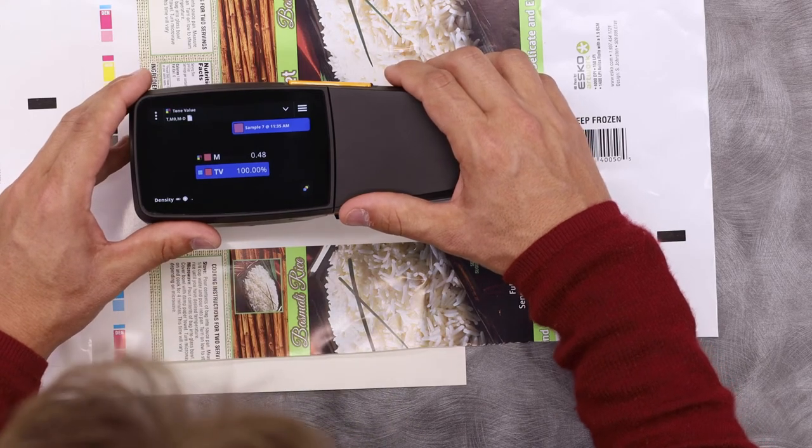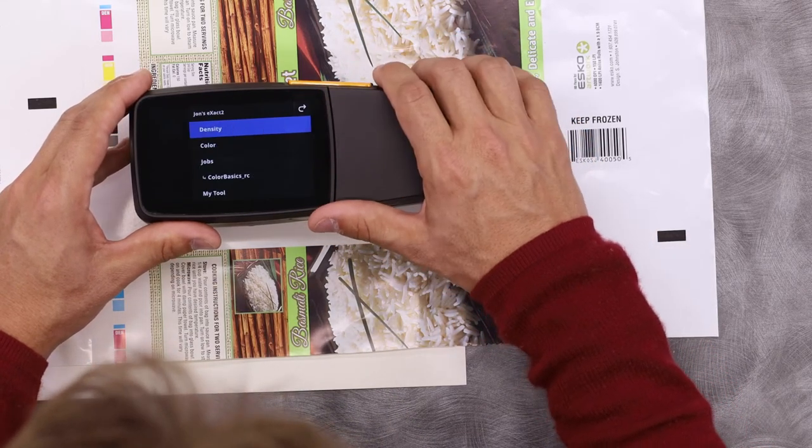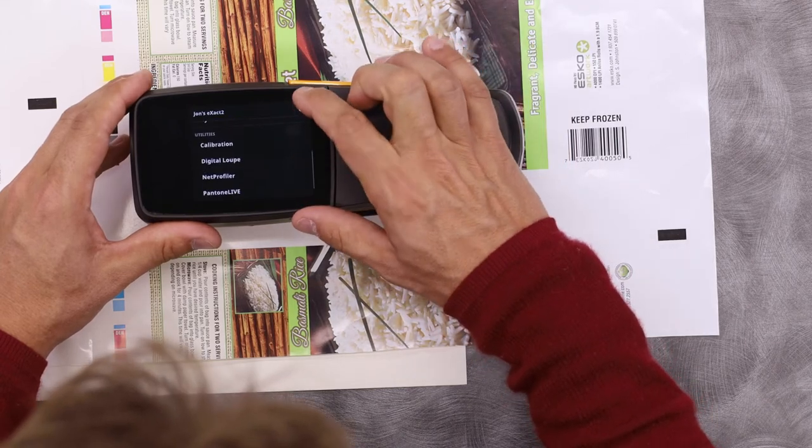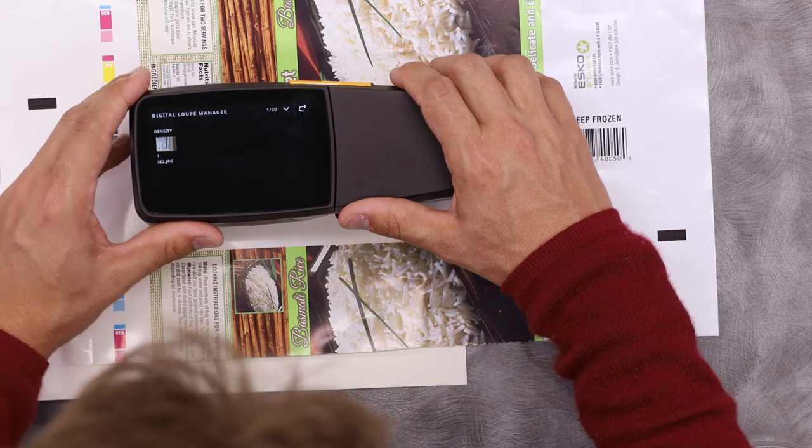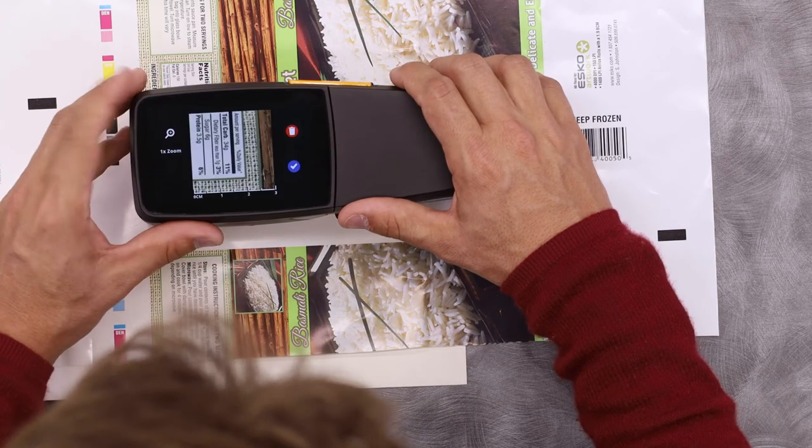If later I want to retrieve that image, come up to my menu. Down in my utilities, I have my digital loop manager here. And now I can see the image that I previously took.